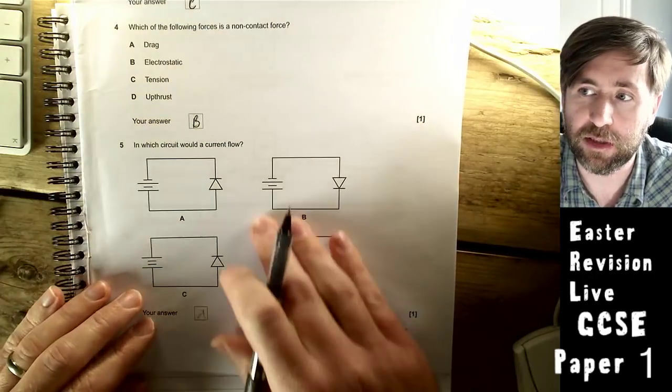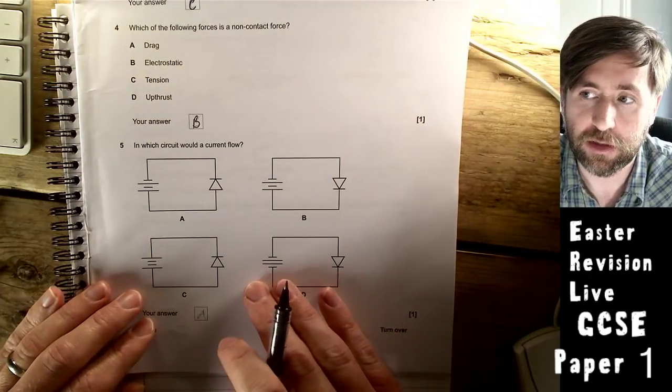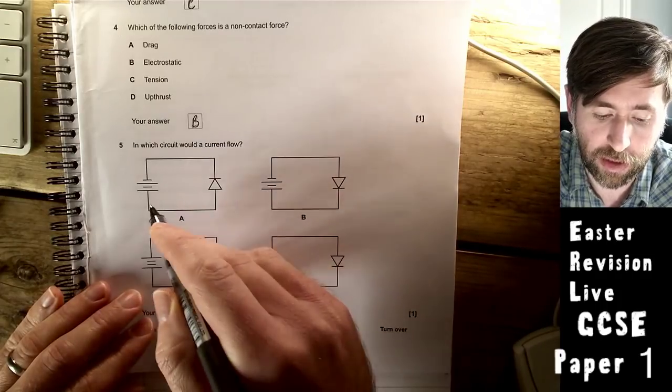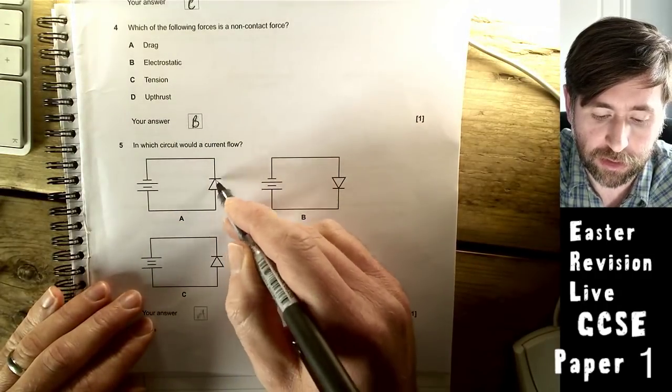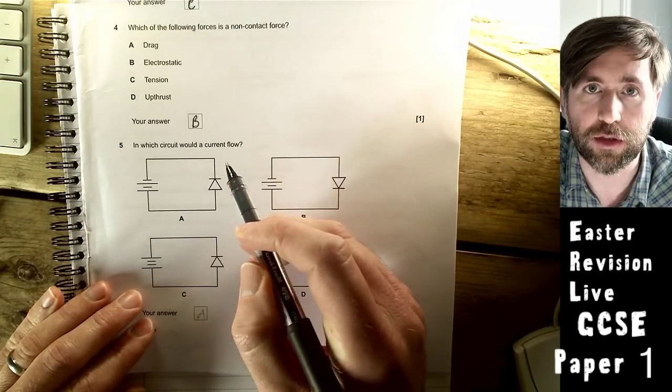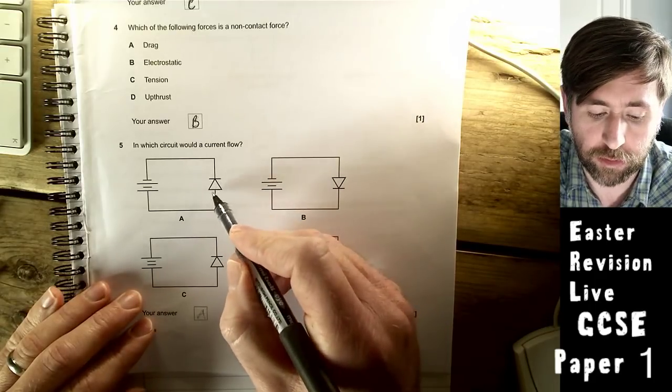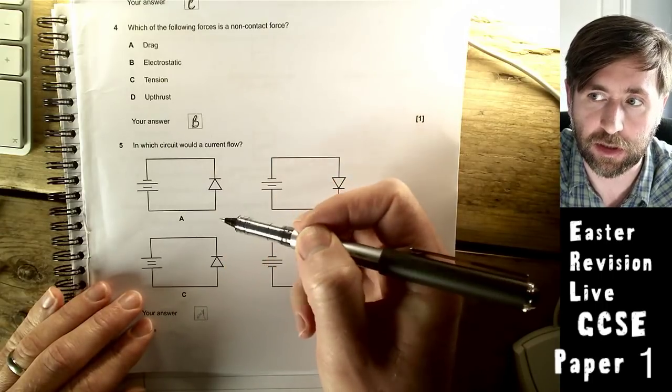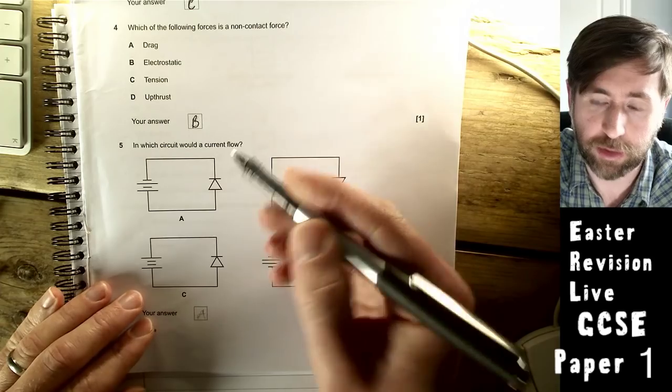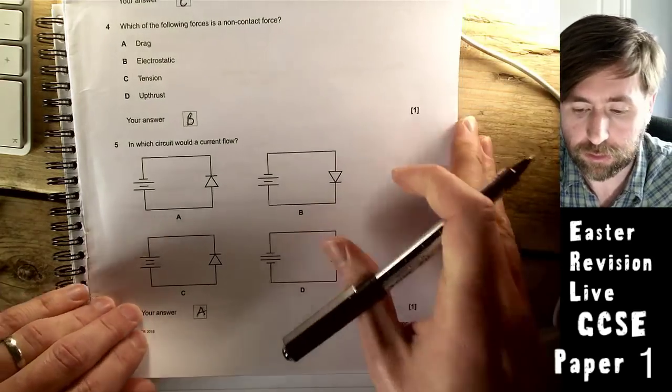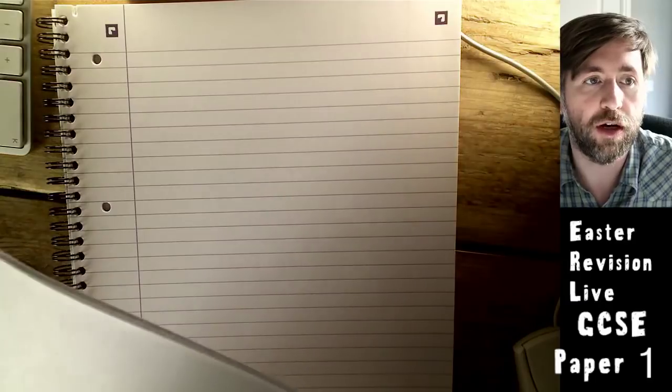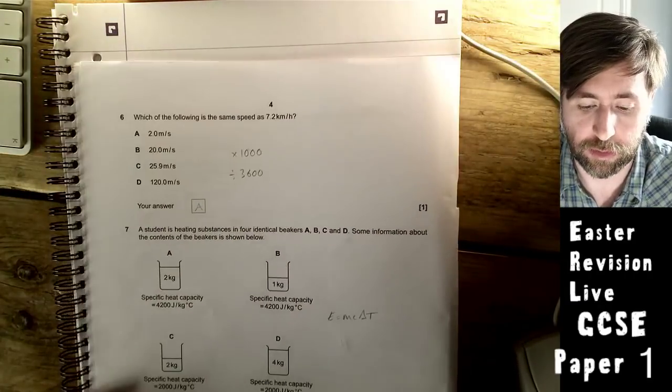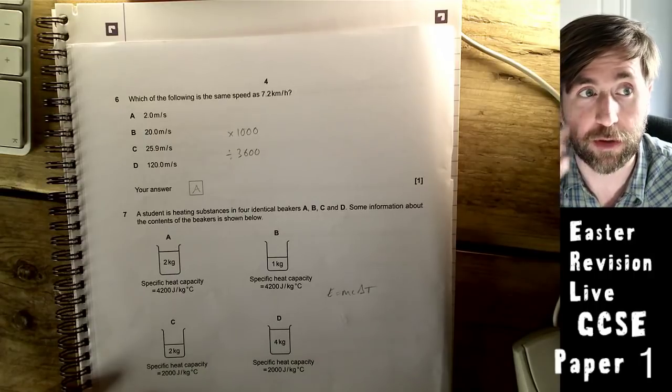In which circuit would a current flow? This is just diodes. All of these are diodes. A diode is something that allows positive charge to flow in the direction of the play symbol. It only allows charge in one direction, the positive direction. The longer side of a cell is the positive side, and this one is hooked to the positive side. So the answer is A.